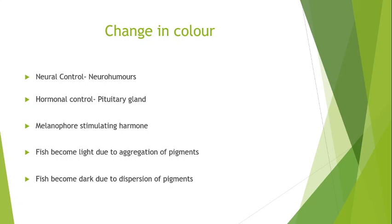Then we will discuss about the mechanism of change in color. Several species of fishes can change their color so as to adjust to the surrounding. A temporary change in color is affected rapidly by rearrangement of pigment cells within the chromatophores. But if we need a permanent or semi-permanent change, then it occurs slowly by the increase or decrease in the number of chromatophores. Generally, change in color of fish is due to the concentration of pigment towards the center of the cell or their dispersion.